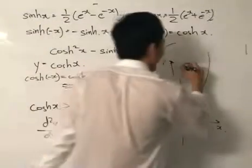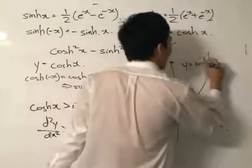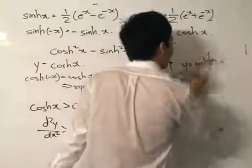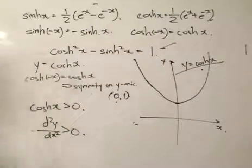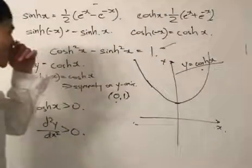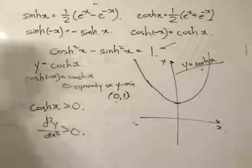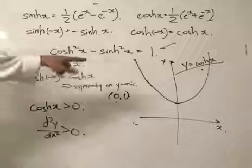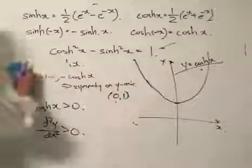So y = cosh x looks like this — symmetric about the Y-axis, minimum at (0, 1), concave up throughout. Be careful not to confuse it with the x² function; it is totally different. This is the cosh x graph.